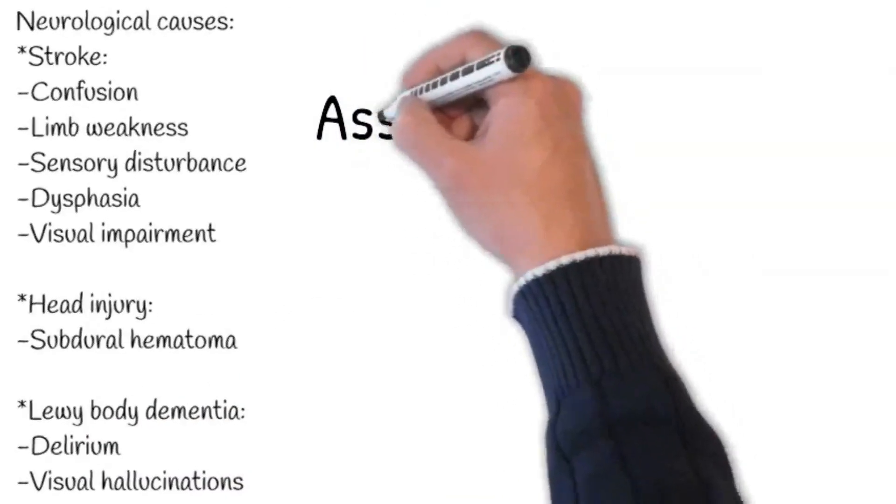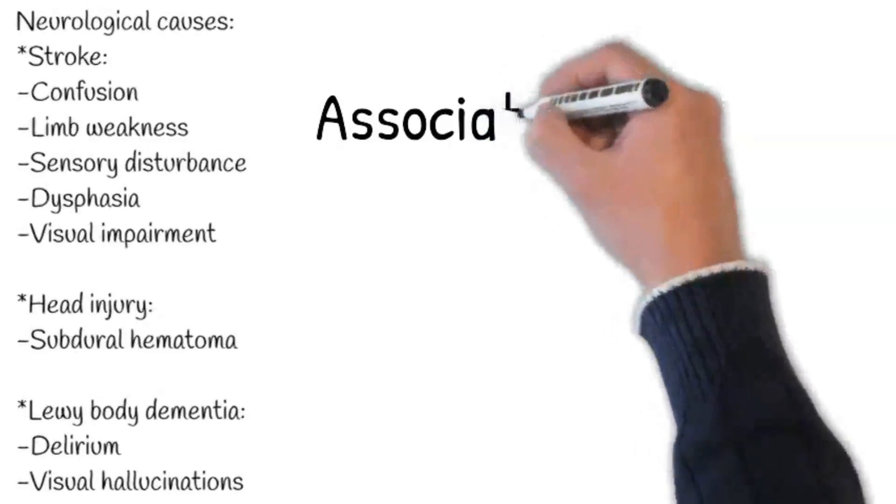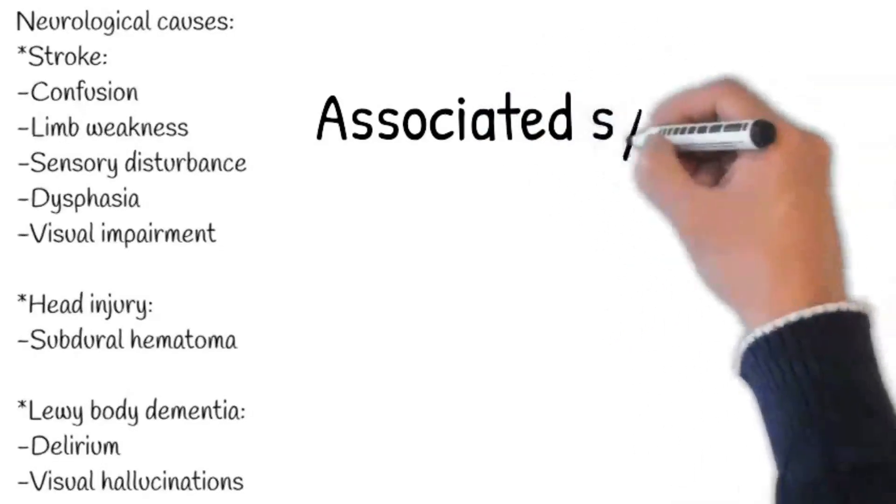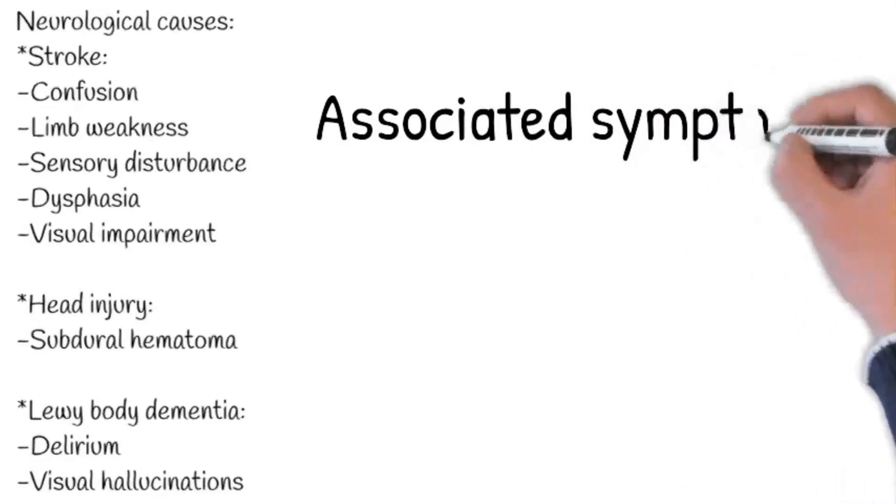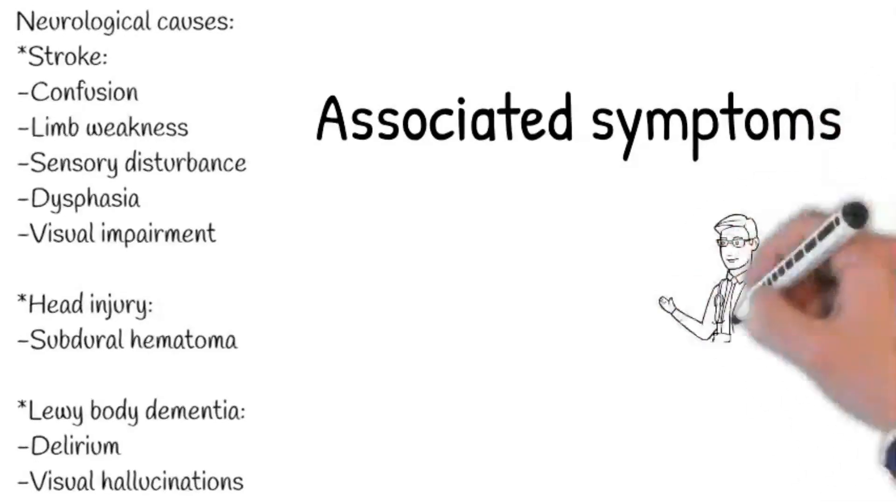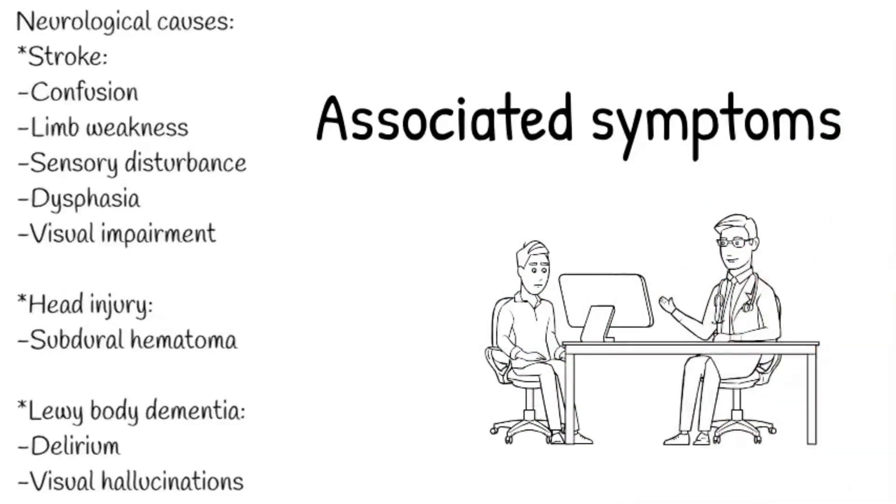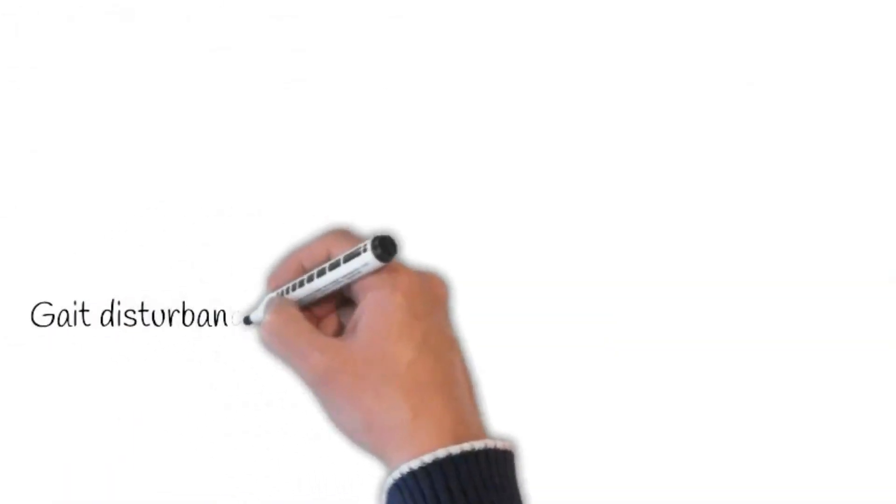History of head injury may provide a clue for subdural hematoma in the elderly. Lewy body dementia may be confused with delirium because fluctuations in visual hallucinations are common and prominent. Ask about gait disturbance and balance problem.